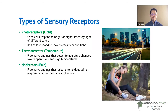Next, we have nociceptors for pain detection. These are also free nerve endings, and they respond to noxious stimuli. Noxious stimuli can include extreme temperatures, extreme mechanical forces, or chemical substances.